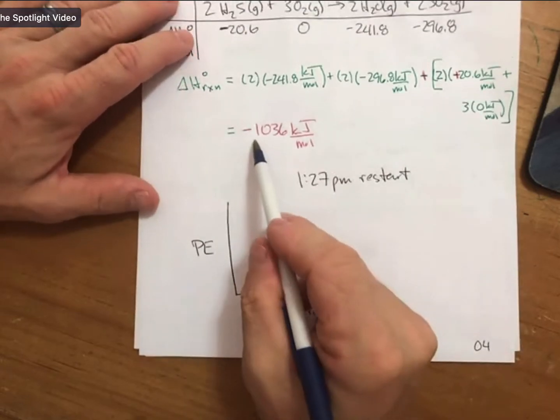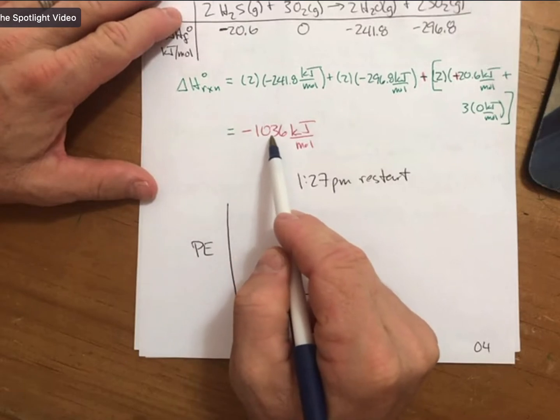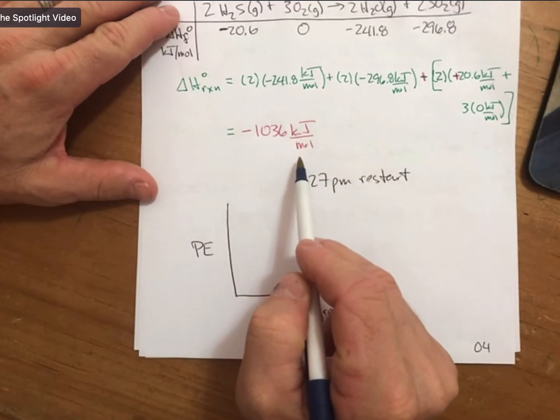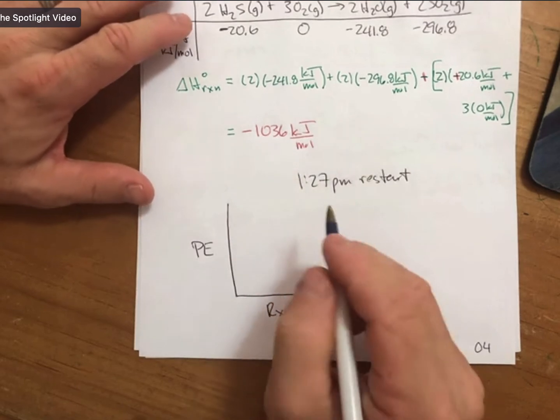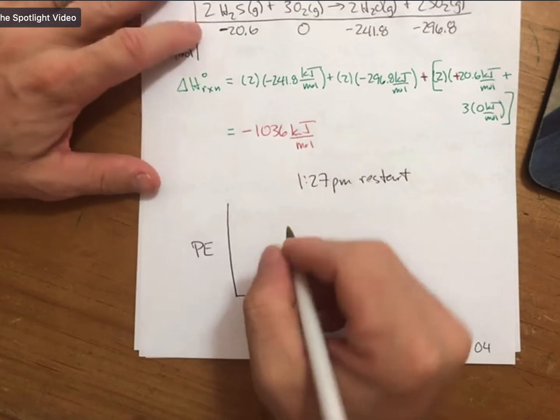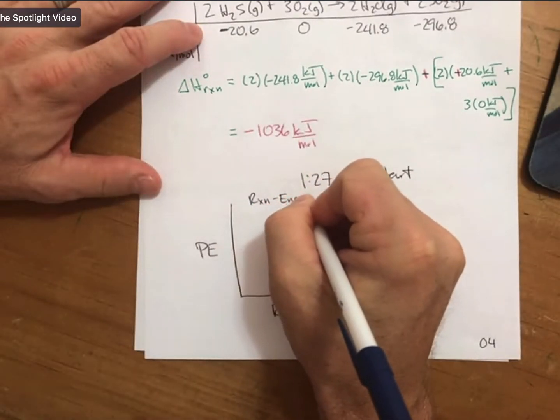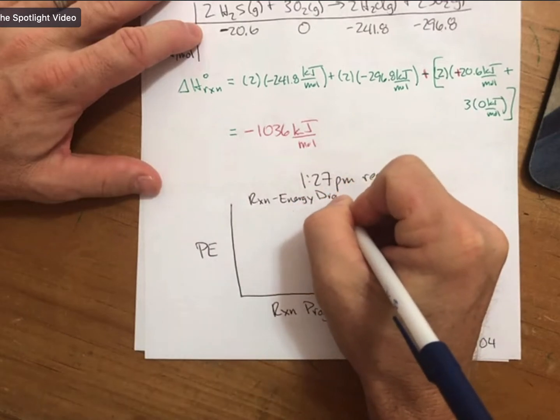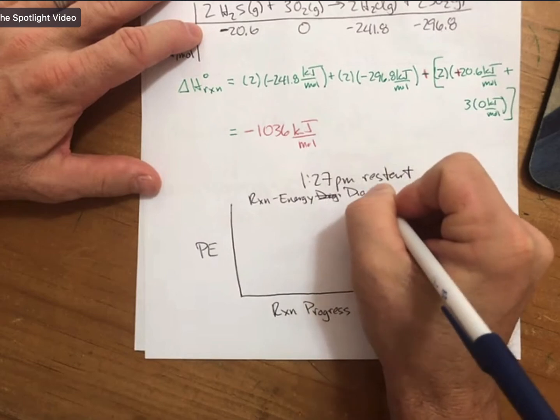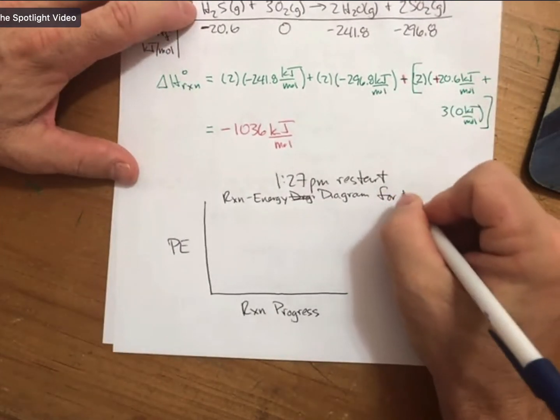For this reaction, we came up with delta H reaction was minus 1036 kilojoules per mole. That is a highly exothermic reaction, and this is going to be a reaction energy diagram for an exothermic reaction.